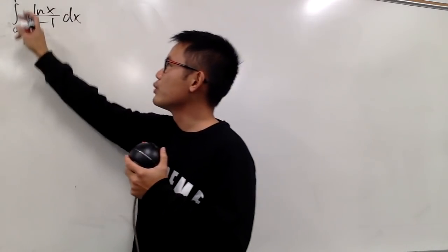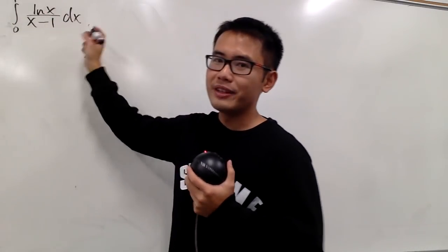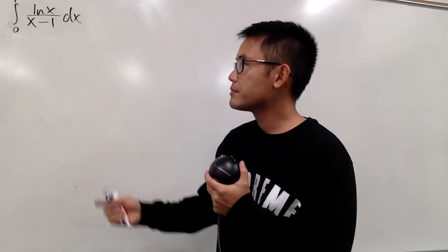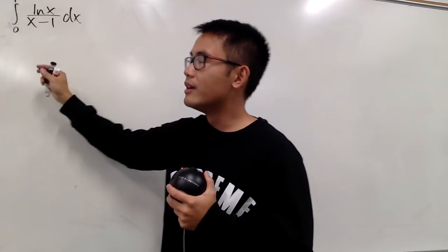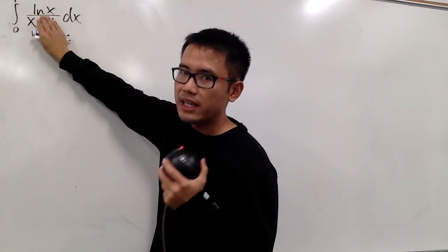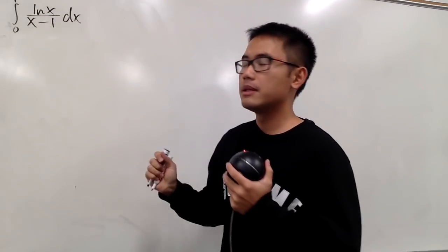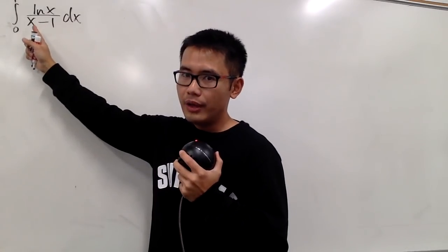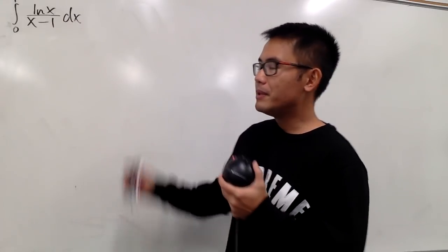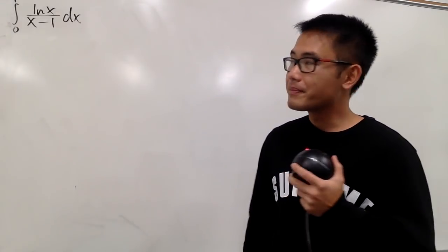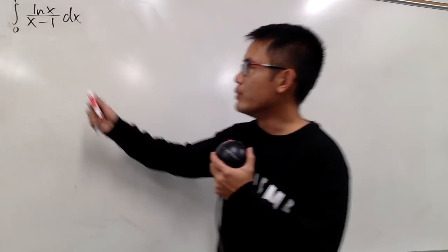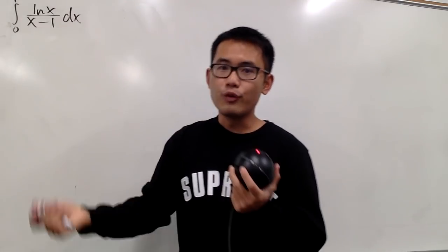Let's focus on the integral from 0 to 1 of ln(x) over (x-1) dx. If you tried this earlier, you might notice this would be much easier if we just had an x in the denominator — then you could just take care of it with u-substitution. But unfortunately, we do have x-1. Maybe that's why this isn't straightforward. So why don't we just start by saying u equals x-1?